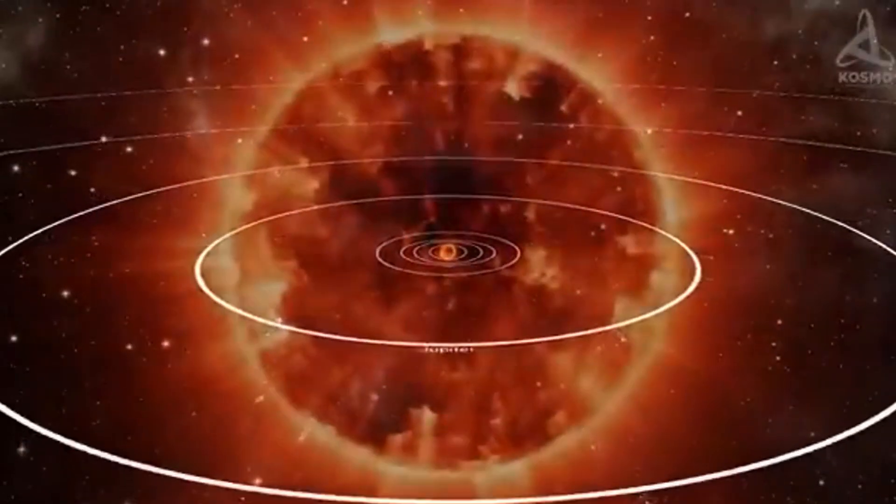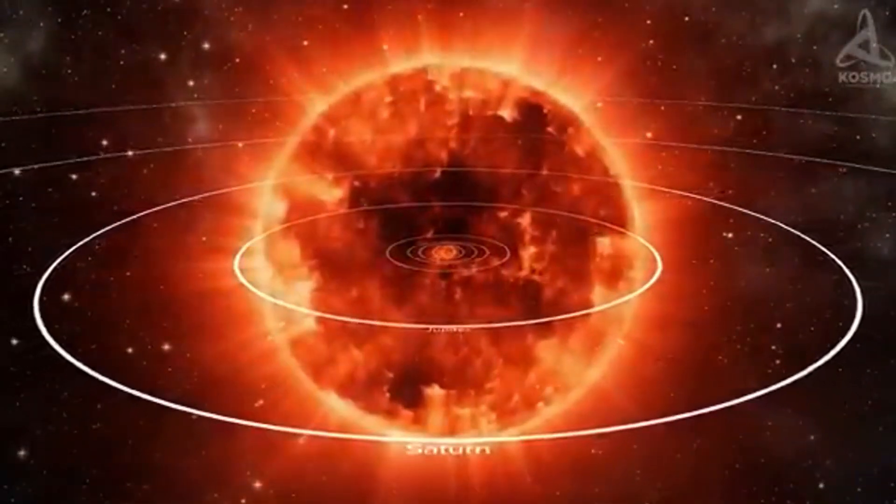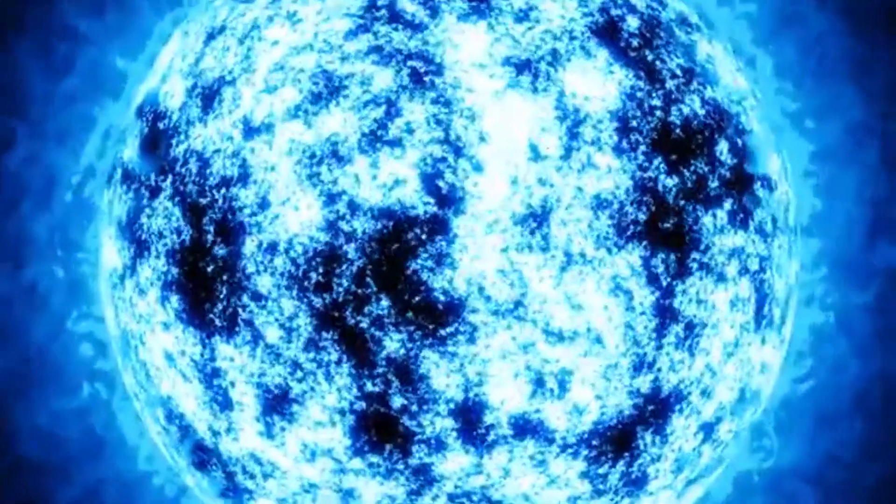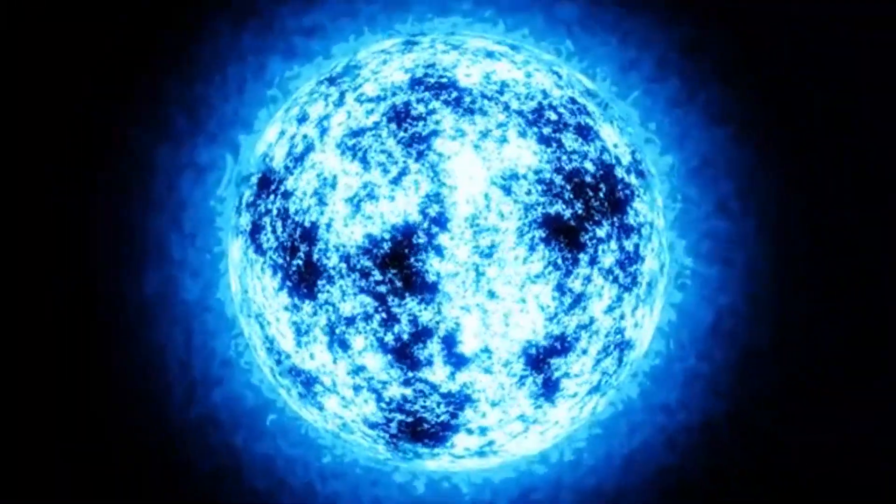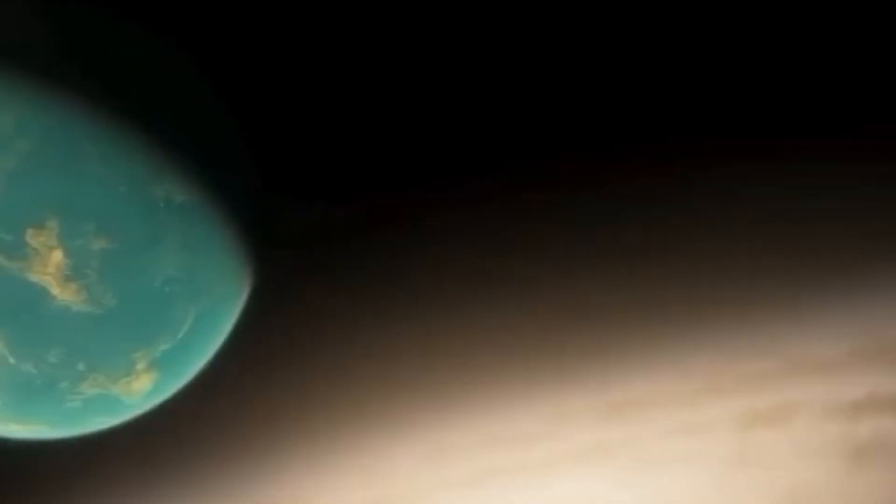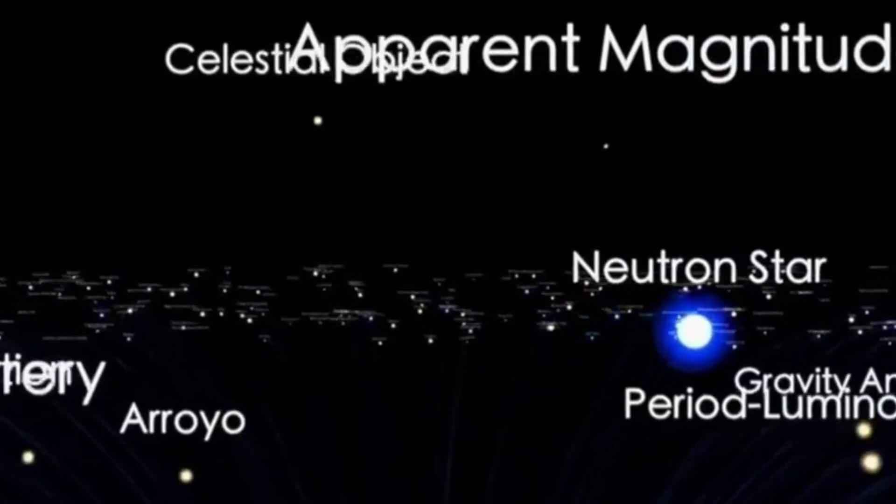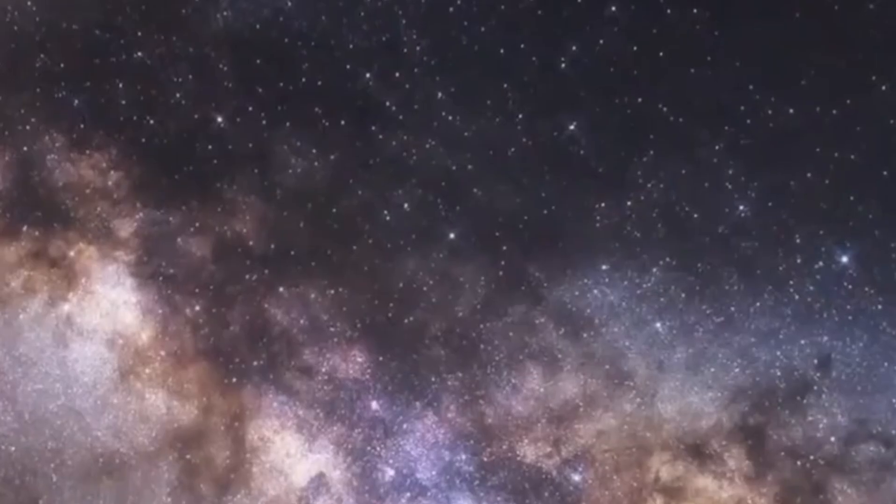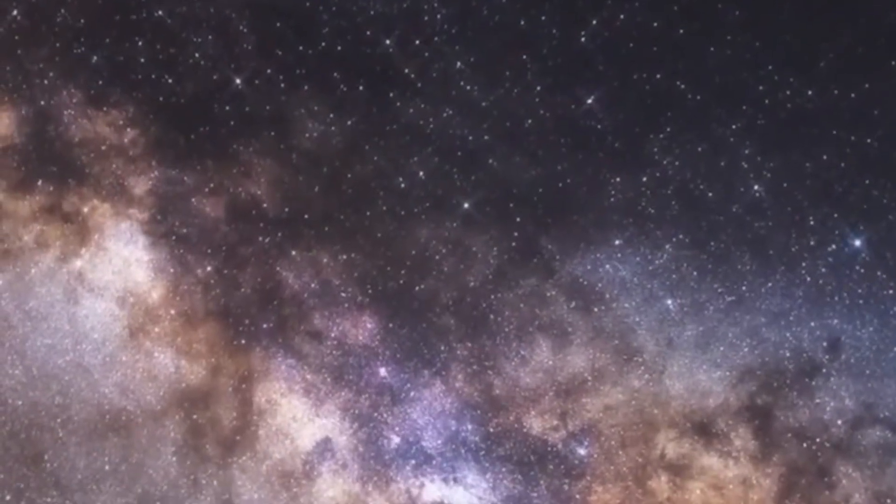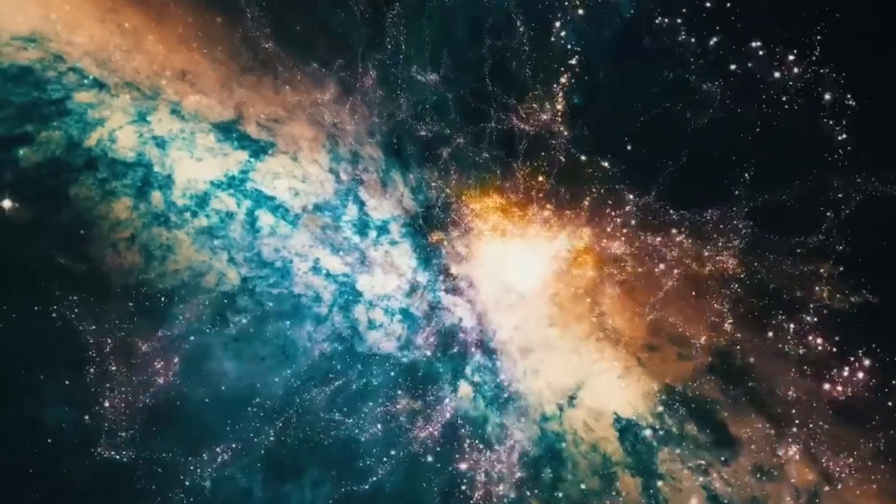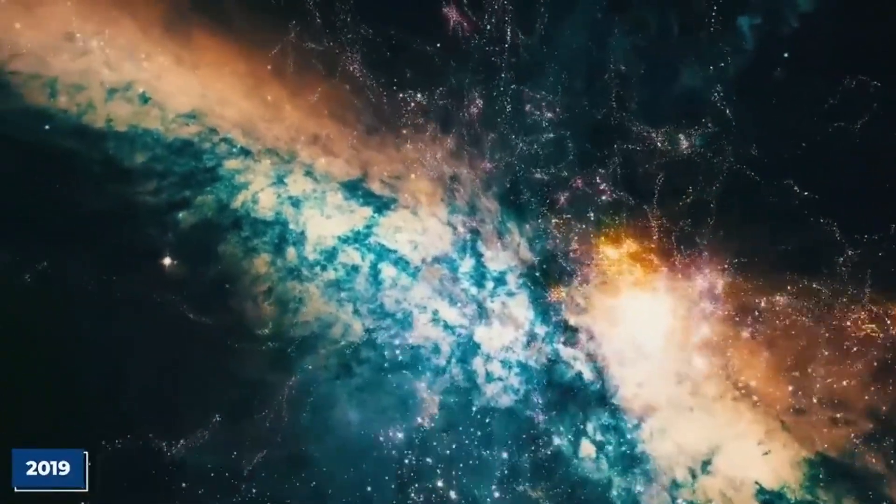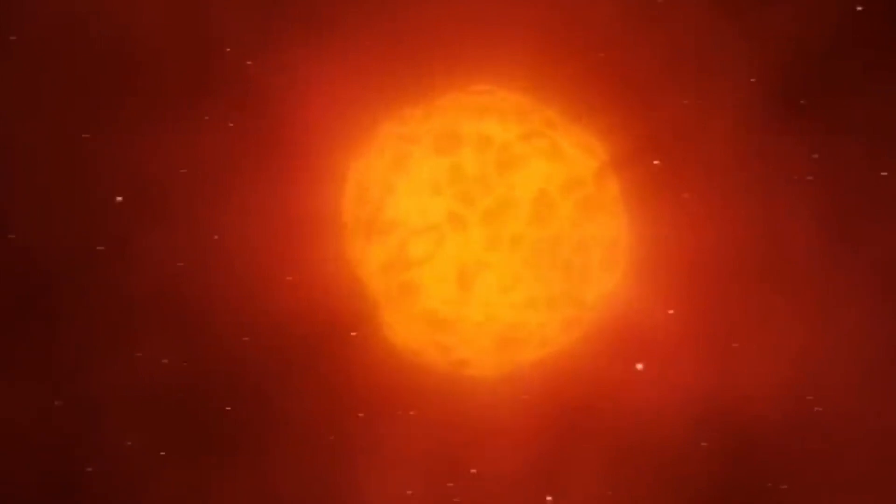Betelgeuse is classified as a semi-regular variable star, meaning it experiences multiple cycles of fluctuating brightness due to variations in its size and temperature. This red supergiant is known to exhibit two main periods of light pulsation. The first period lasts 400 days and is believed to be caused by pulsations in the fundamental mode. The second period is a longer cycle of approximately 5-6 years, and its origin remains unknown.